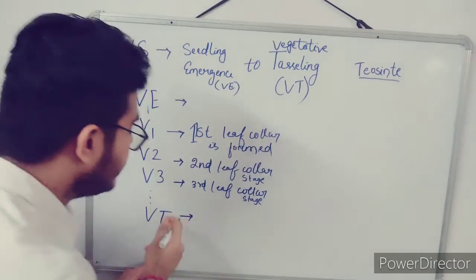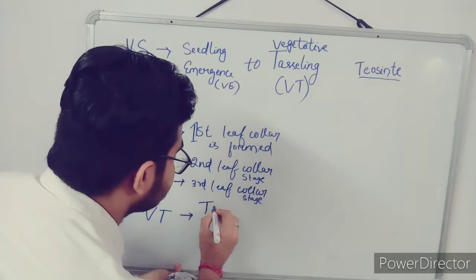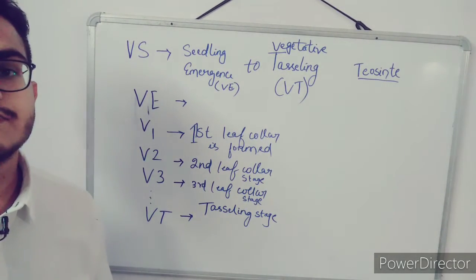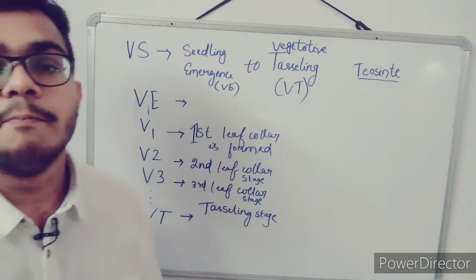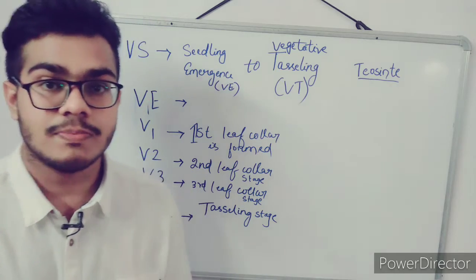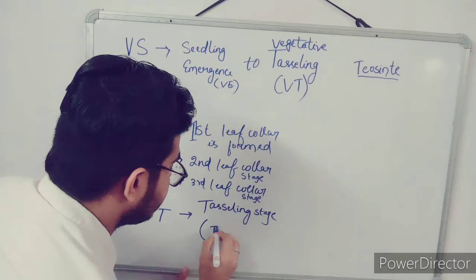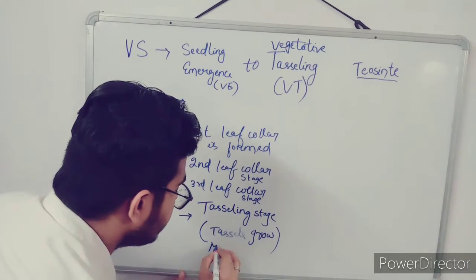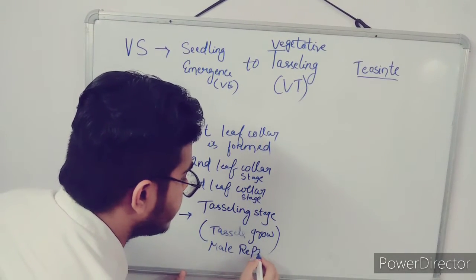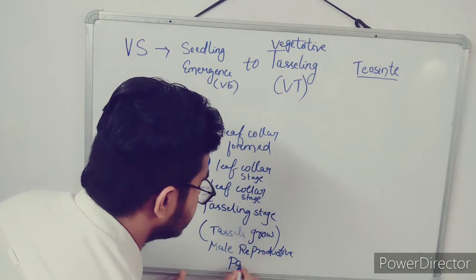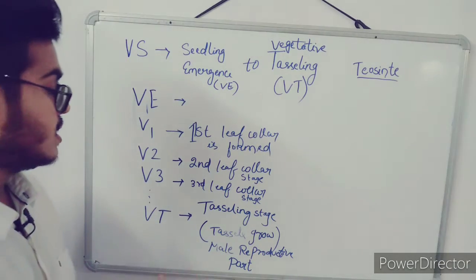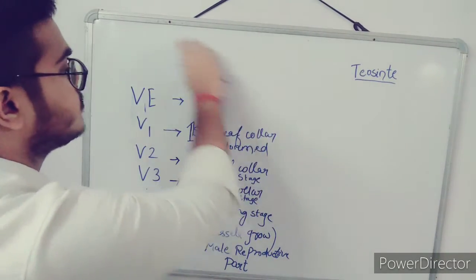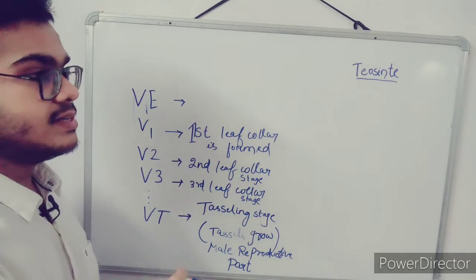The VT stage is the tasseling stage. In the tasseling stage, the male reproductive part — called the tassels — grows at the main shoot top. So tassels are the male reproductive part of the maize plant. This is where the vegetative stage of the maize crop ends.